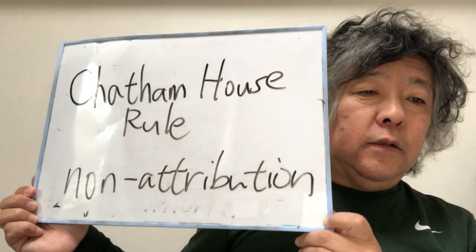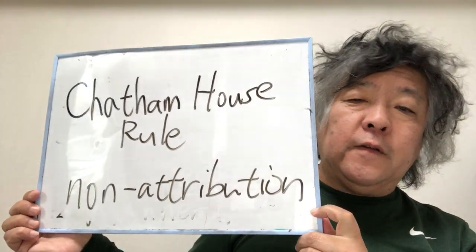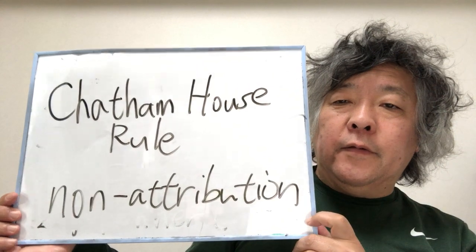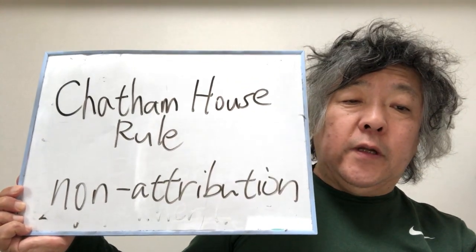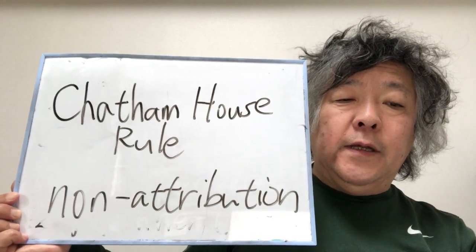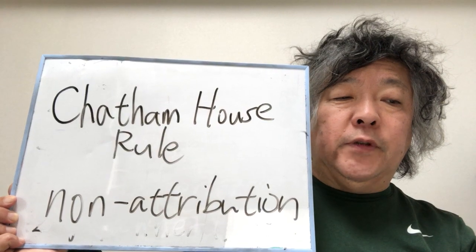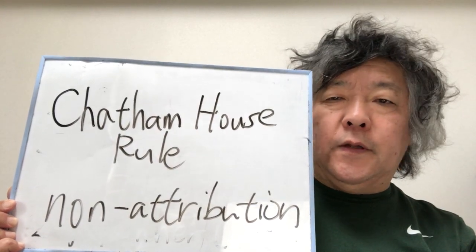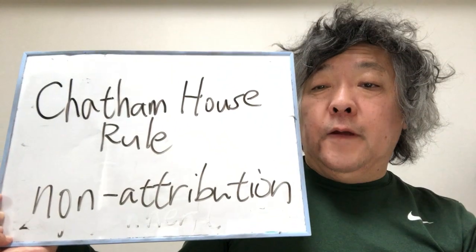Today I would like to discuss the Chatham House rule. Chatham House is the Royal Institute of International Affairs located in London. It was established in 1920 and has a membership of 3,150. There have been many important public debates in this house about international affairs and policymaking.